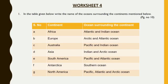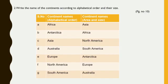Second one is Europe — surrounded by the Arctic and Atlantic Oceans. Third one is Australia — Pacific and Indian Oceans. Fourth one is Asia — Indian and Arctic Oceans. Fifth one is South America — Pacific and Atlantic Oceans. Next is Antarctica — surrounded by the Southern Ocean. And North America is surrounded by the Pacific, Atlantic, and Arctic Oceans.